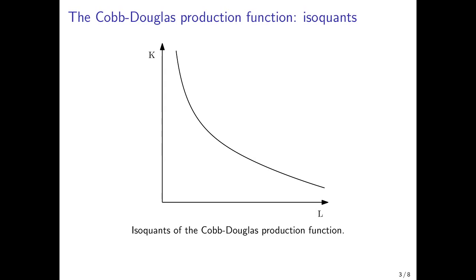The isoquants of the Cobb-Douglas production function look like the one drawn here. The isoquant is basically a collection of points along which I can produce the same output level with different combinations of capital and labor. Along this line, the elasticity of substitution between capital and labor is always equal to one.